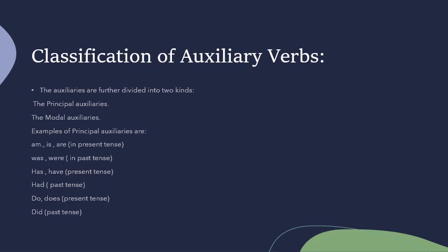Examples of principal auxiliaries are: am, is, are in present tense; was, were in past tense; has, have in present tense; had in past tense; do, does in present tense; and did in past tense.